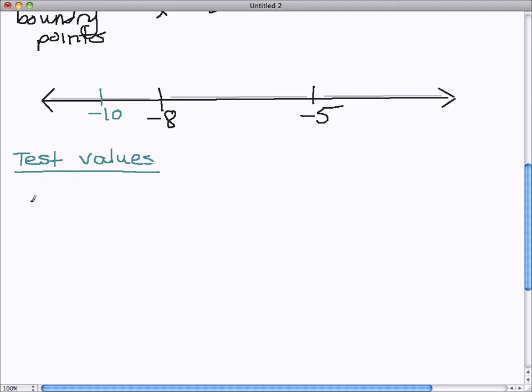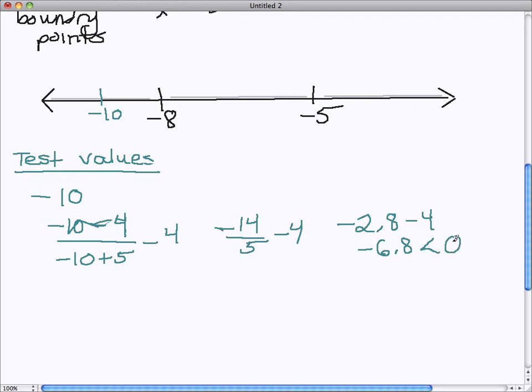From the first region, I'm going to choose negative 10 as a test value. And we're going to plug that into our original equation. So (x-4)/(x+5) becomes (-10-4)/(-10+5) minus 4. And we want to see if that's going to be less than 0. So on the top, I have negative 14. On the bottom, I have 5. We have negative 2.8 minus 4, which gives me negative 6.8. And since negative 6.8 is less than 0, we say that is true. And that is going to be one of our solution regions. And since it's a solution region, I'm going to color it green to indicate this is a good area.